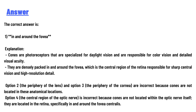Explanation: cones are photoreceptors specialized for daylight vision and are responsible for color vision and detailed visual acuity. They are densely packed in and around the fovea, which is the central region of the retina responsible for sharp central vision and high resolution detail. Options two and three are incorrect because cones are not located in those anatomical locations.